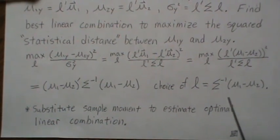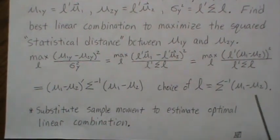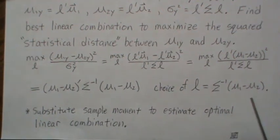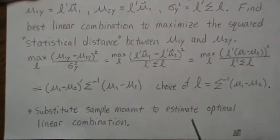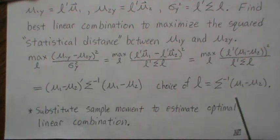So now this is, these are population parameters, which we'll probably never know. So we substitute in the sample moments to estimate the optimal linear combination.